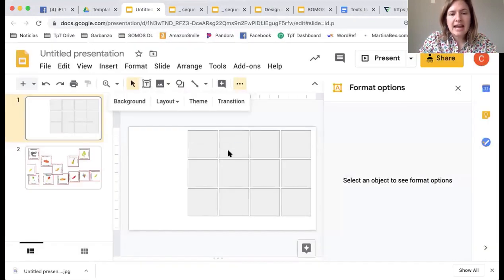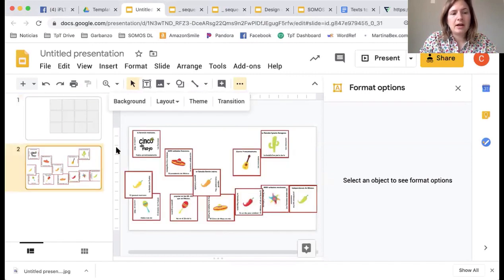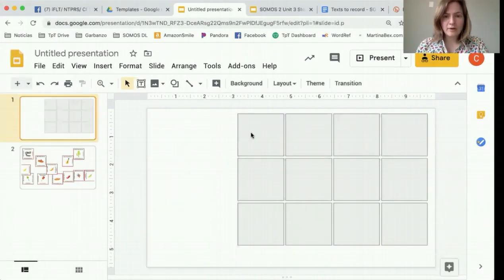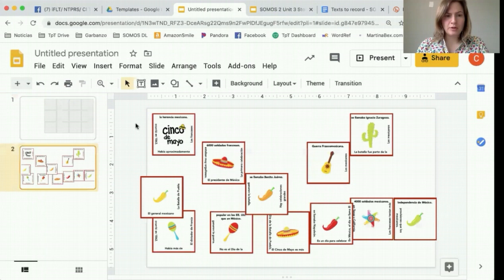Now what this did was now students aren't going to get frustrated because as they're moving around these squares on top, they're not going to accidentally move around these gray squares. Slides doesn't have an option to just lock things like Pages does or Keynote, and so that can be really frustrating when kids are trying to move around the other things. So this makes it so that they can still see where the squares are supposed to go, but they're not going to be accidentally moving around the gray slides. So once you have your locked slide, you can put your cards back on here.